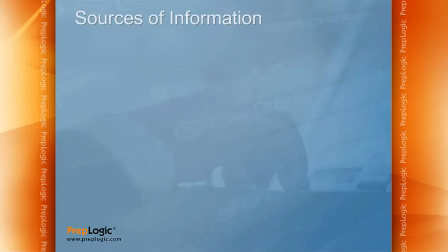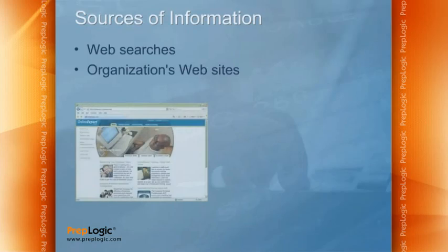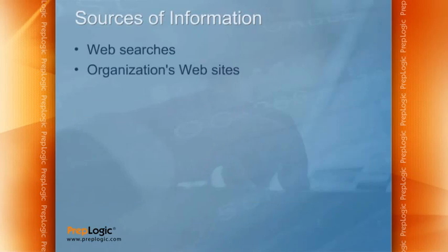A beginning ethical hacker will ask: where do I get this information to perform footprinting? There are many information sources at your disposal. You can use web searches — Google and other search engines can reveal a tremendous amount of information about individuals or organizations. You can also use the organization's website itself, not just in its current state but as it was in previous years. Organizations sometimes post sensitive information and later remove it, thinking it's gone — but we'll see how to retrieve that information even after it's been taken down.